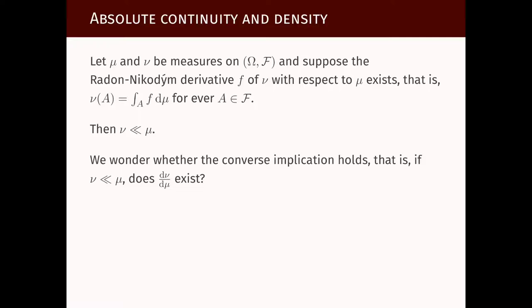Now let us consider one case: when a measure ν has a Radon-Nikodym derivative or density, denoted f, with respect to the measure μ. That is, suppose ν(A) = ∫_A f dμ for every A ∈ F. In that case, if there is a density of ν with respect to μ, then ν ≪ μ.